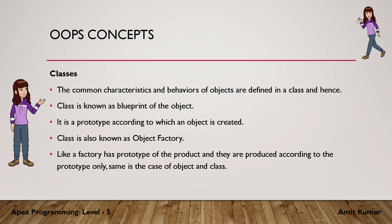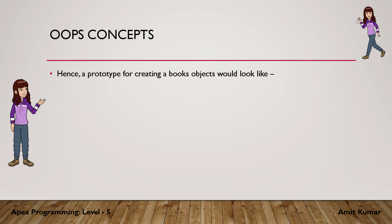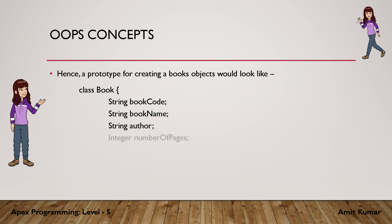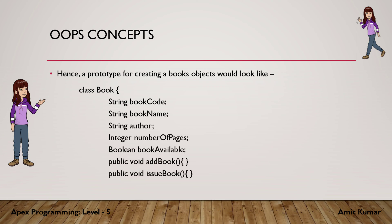Like a factory has a prototype of the product and products are produced according to that prototype only, the same is the case with objects and classes — objects are created according to the prototype defined in the class. To create an object, the first thing required is to define a class or prototype for it. A prototype for creating book objects would look like this: we create a class with different characteristics and behaviors of the book, where variables represent the characteristics and methods represent the behaviors.